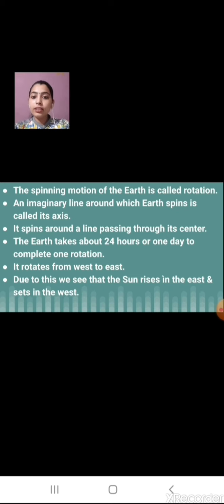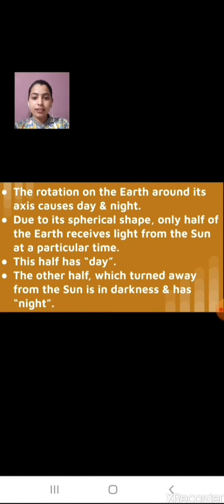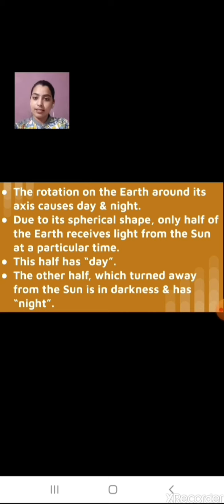When earth rotates, it does so on an imaginary line, and that imaginary line is called the axis. Due to rotation, day and night happen. Due to its spherical shape, only half of the earth receives light from the sun at a particular time, and the other half has darkness because that part is away from the sun, so it has night.